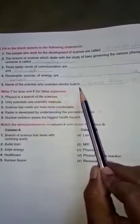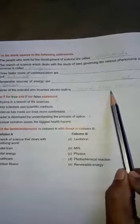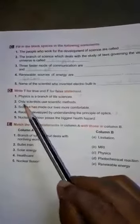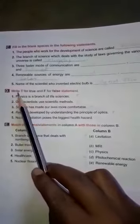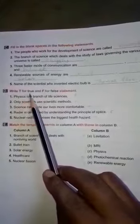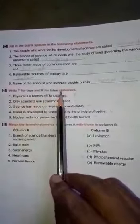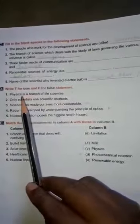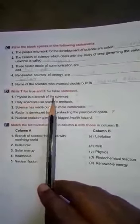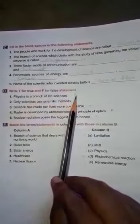The name of the scientist who invented the electric bulb is Thomas Alva Edison. Now section D: write T for true and F for false statements. Physics is a branch of life science - it is false.